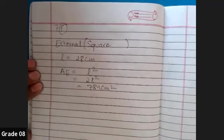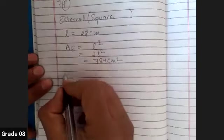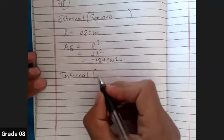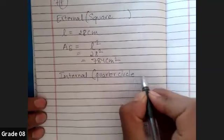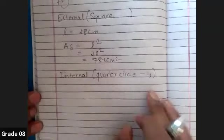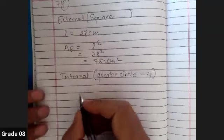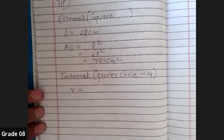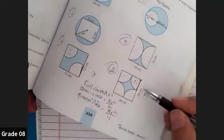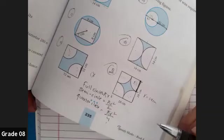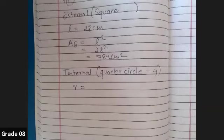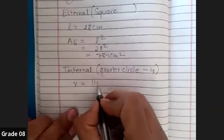Now for the internal part, we write that there are four quarter circles. To find the area of a circle, the radius is very important. According to the question, the full length is 28 centimeters. So half of 28 is going to be the radius — that means the radius of each quarter circle is 14 centimeters, because the total length was 28.